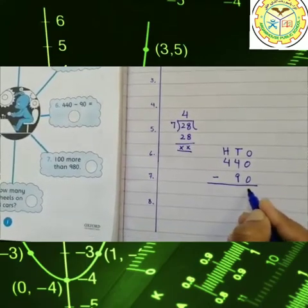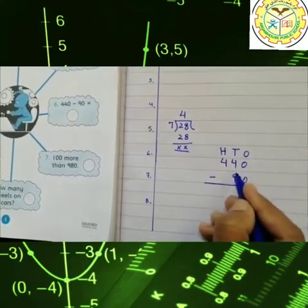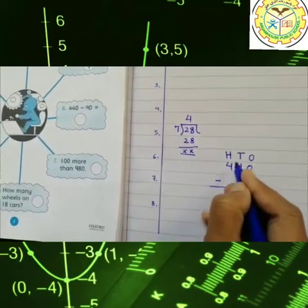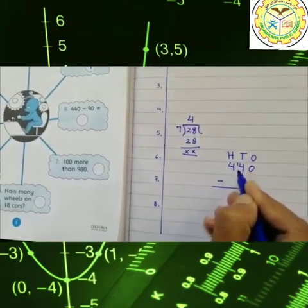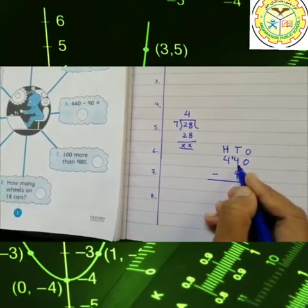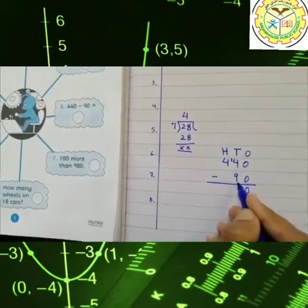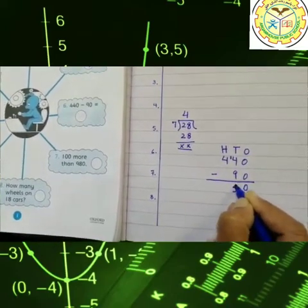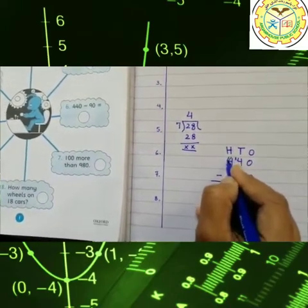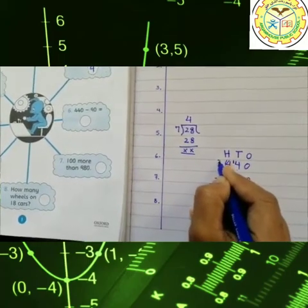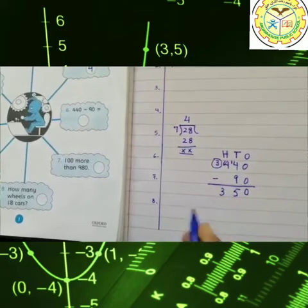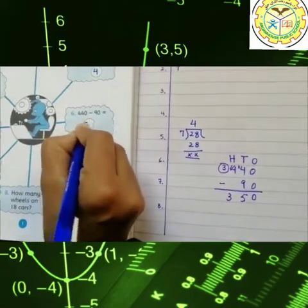We can subtract it now. Hum 0 mein se 0 ko minus karte hain, we get 0 here. We cannot subtract 9 from 4, so we take 1 from here as a carry. After that, jab hum 14 mein se 9 ko minus karenge, then we get 5. This is 5. And remaining number is here 3. This is 3. So the answer is 350.